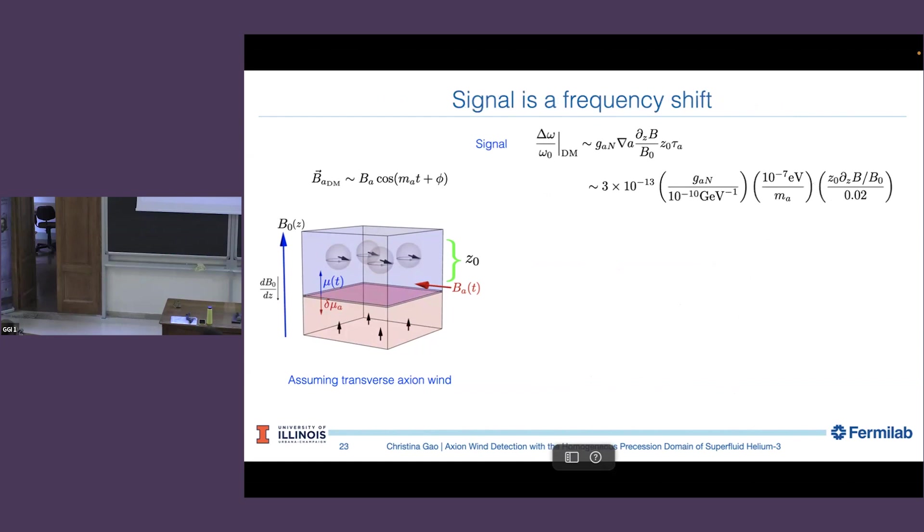In terms of numbers, let's put in some numbers: 10 to the minus 10 inverse GeV for axion mass around 10 to the minus 7 eV with a gradient, a fractional gradient field 0.02. This number is told by our experimental colleagues working on these experiments. So the frequency shift relative to the initial Larmor frequency is roughly 10 to the minus 13. This is a very, very small number. However, if you talk to AMO physicists and ask what is the best clock precision they can achieve nowadays, it's 10 to the minus 17. So we think this is not completely insane.